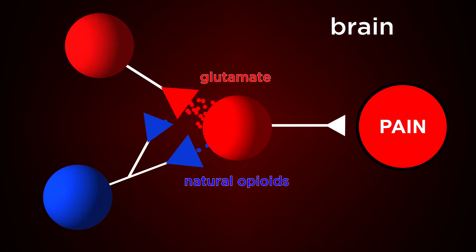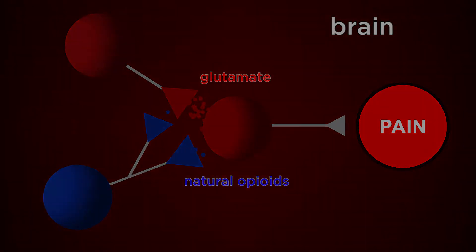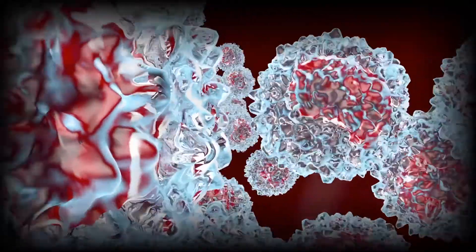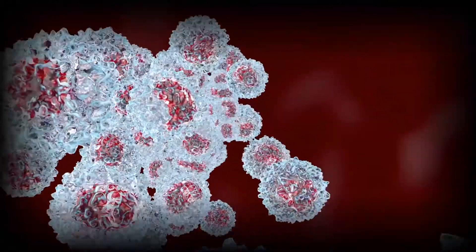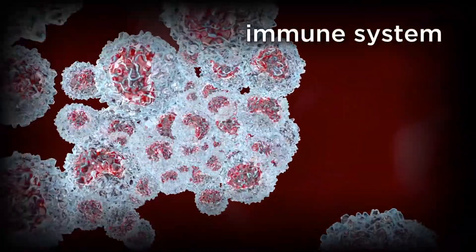Importantly, these changes in the nervous system are moldable and not permanent. In addition to changes in the brain, chronic pain conditions are often associated with changes in the immune system.